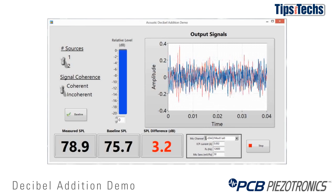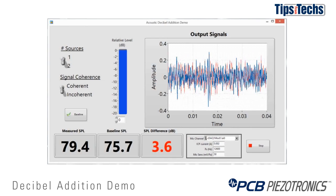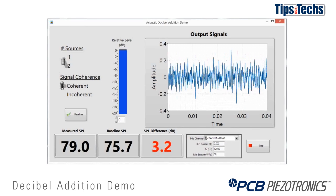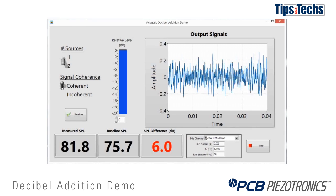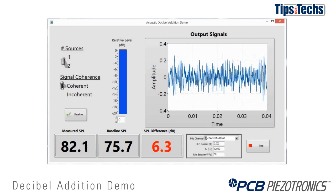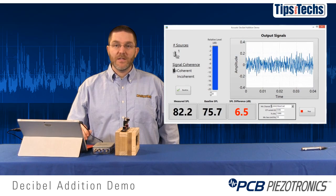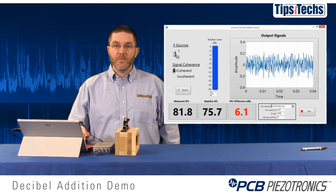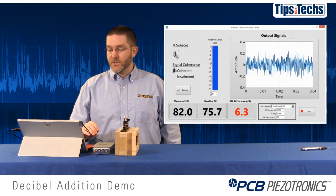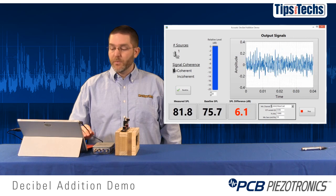Now we'll make the signal between the two speakers coherent. You can see that it's exactly the same signal and we get a 6 dB increase for doubling of coherent sources as the theory would predict.